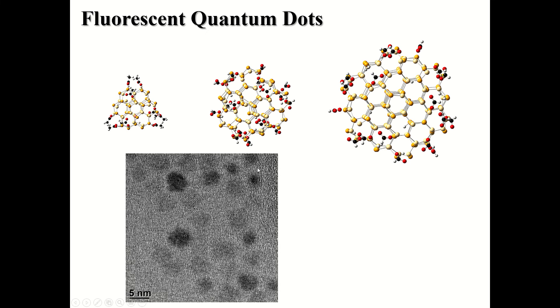You can image these in electron microscopes, so you can see that here, and you can see why we call these quantum dots is because they're round, and they're round for the same reason that a bubble is round. It's surface tension.